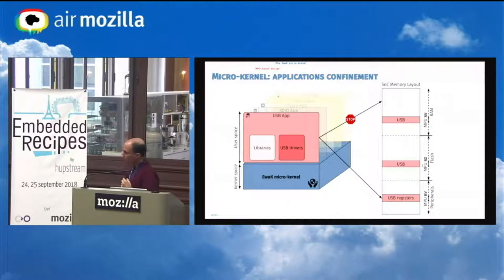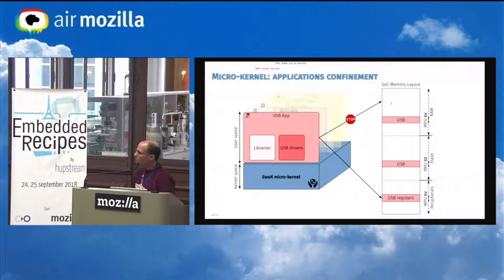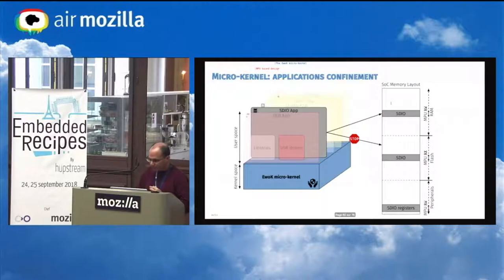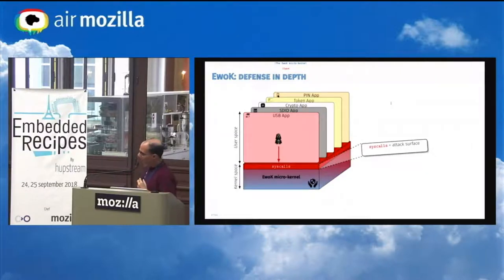So when the USB application tries to access its registers, that is okay. Accessing its code is okay. Accessing its data in RAM is okay. But when it tries to access another part of the memory that does not belong to it, that is not allowed. The same applies for the SDIO module. When we consider the attack surface of such a micro-kernel, we have the system calls as an input API.